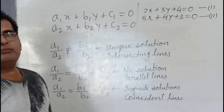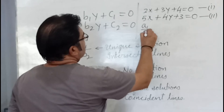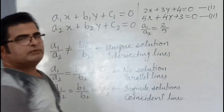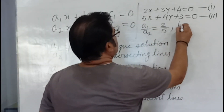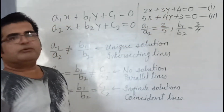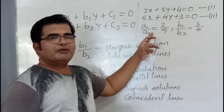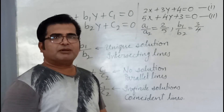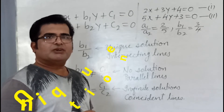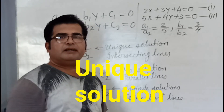Here, a1/a2 = 2/5 and b1/b2 = 3/4. Since 2/5 is not equal to 3/4, this means a1/a2 ≠ b1/b2, so we can solve this equation because it will have a unique solution. If you draw the graph for these equations, you will definitely get intersecting lines.